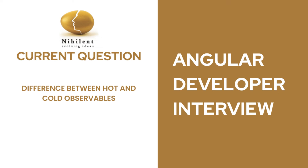Why do we use debounce? Suppose I have a search box and every keystroke sends a query to the API. If I'm typing 'keyboard', each individual letter like 'k', 'ke', 'key' triggers an API call — that's not ideal. With debouncing, we wait until the user stops typing, and only after a specified millisecond delay does the API call trigger. This is how debouncing helps with keydown or keyup events.